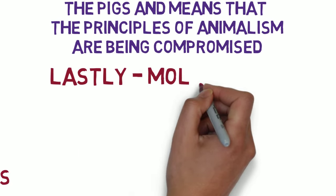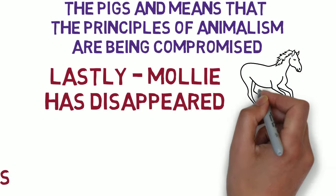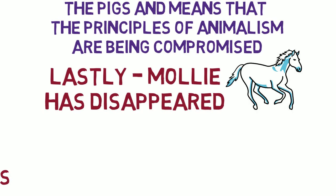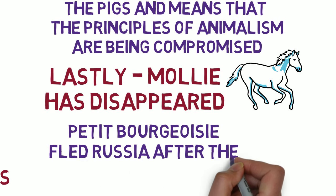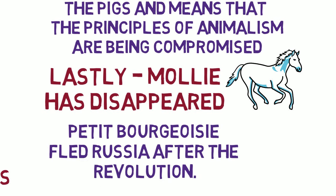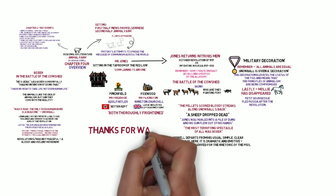Just before this, we learn that Molly — the white mare — has disappeared. Remember that she represents the petty bourgeoisie: the lower middle classes who had quite a comfortable life and didn't like the sound of communism. Many of them fled Russia a few years after the Russian Revolution. So by chapter four, she's had enough and she's going. That's a summary of chapter four. Chapter five will be posted shortly — thank you so much for watching.